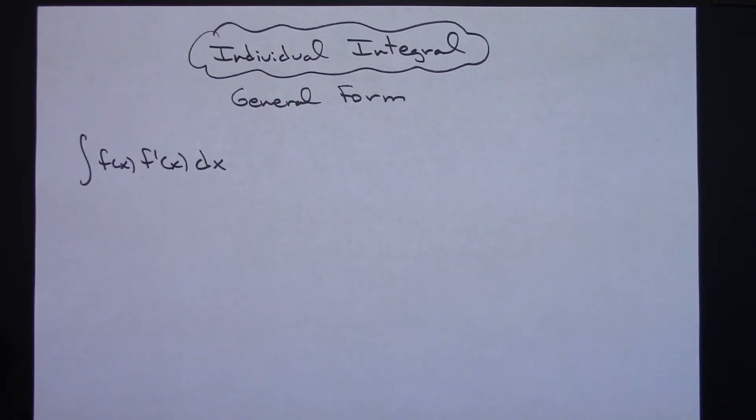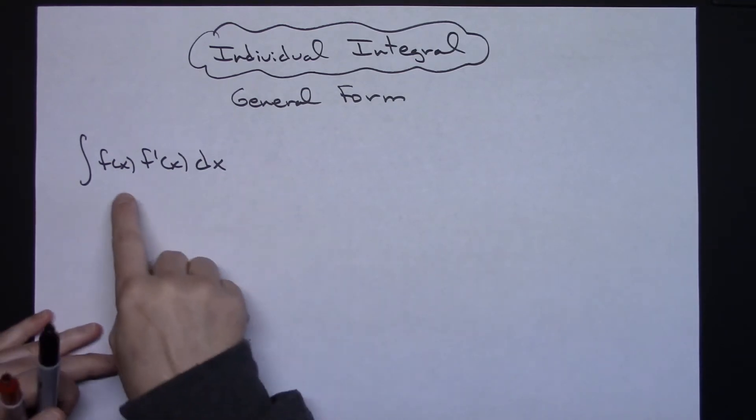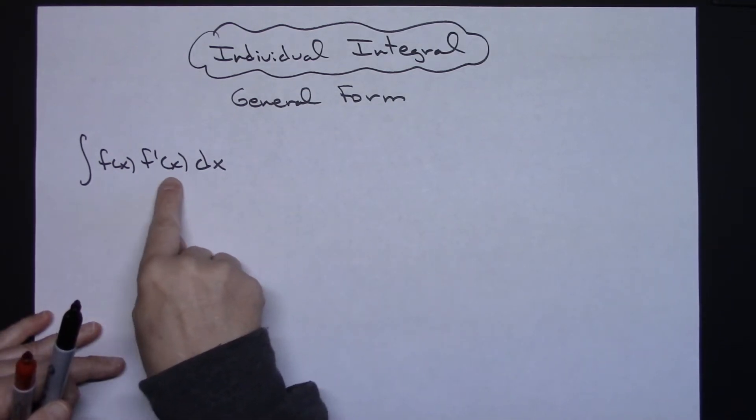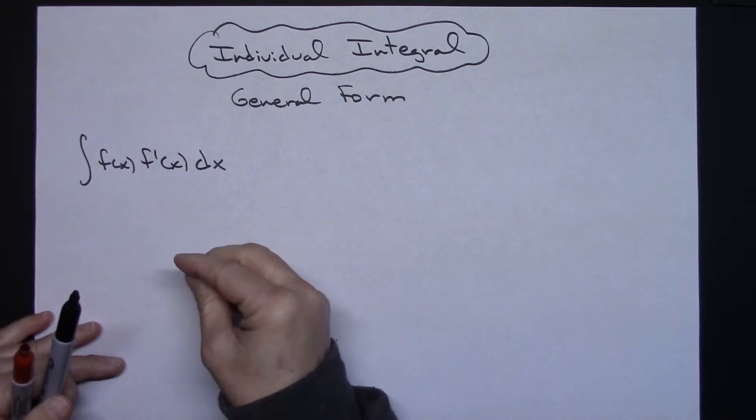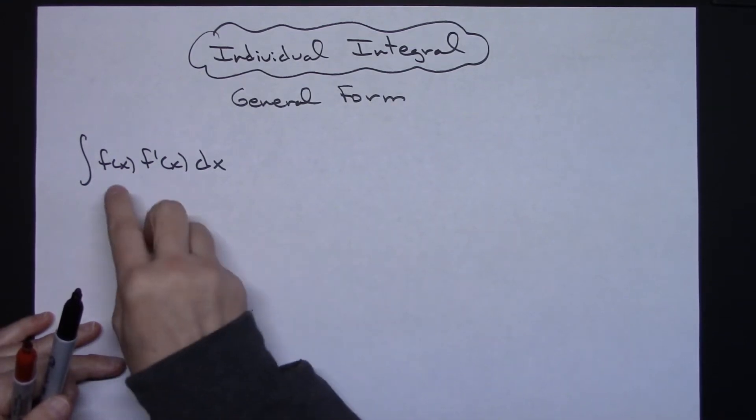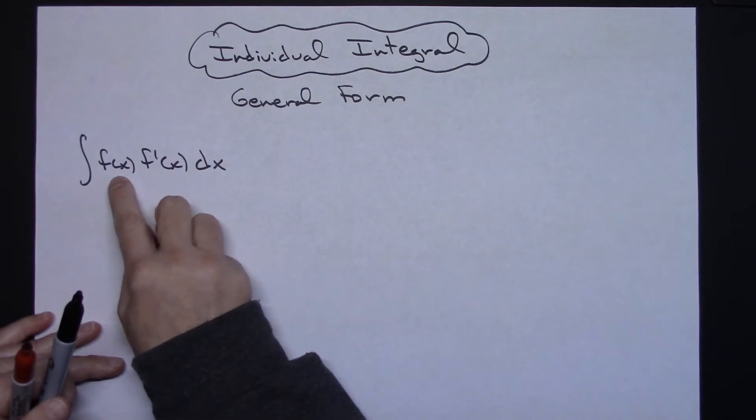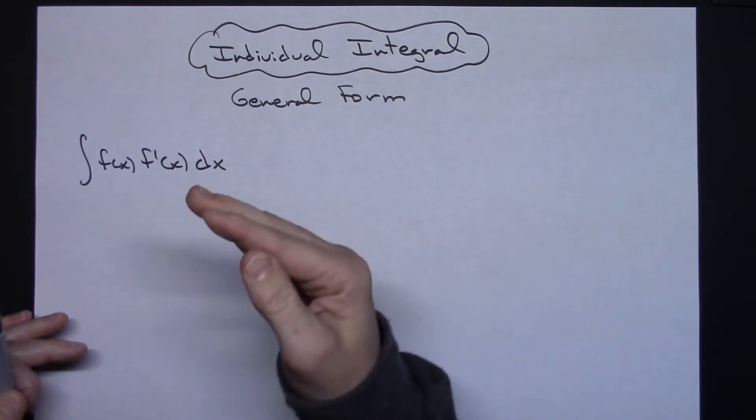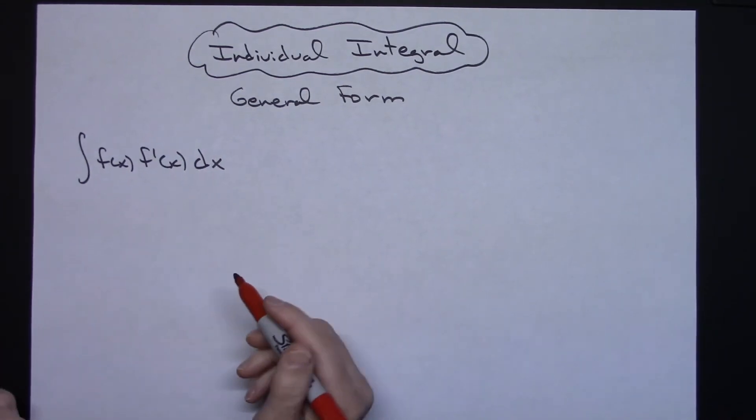In this video I'm going to be taking a look at an individual integral in a general form. We're going to look at this with an f of x and f prime of x in here so that we don't actually know what the functions are, we just know that we've got two functions being multiplied together and one's the original function, one is the derivative, and then how would we go about integrating that.